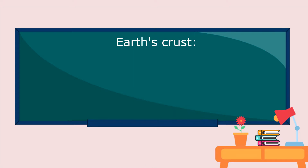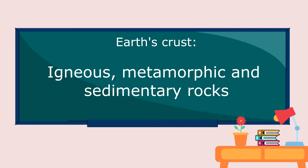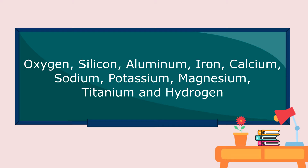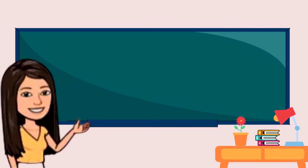Earth's crust is composed of igneous, metamorphic, and sedimentary rocks. There are elements in the Earth's crust such as oxygen, silicon, aluminum, iron, calcium, sodium, potassium, magnesium, titanium, and hydrogen.